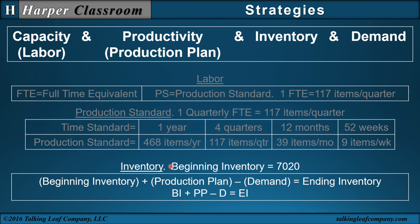For inventory, we will assume a beginning inventory of 7,020. The relationship is: beginning inventory plus production — in whatever time interval we're looking at — minus demand equals ending inventory. So there's a defined relationship for our inventory.